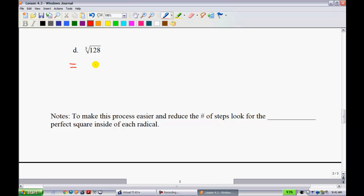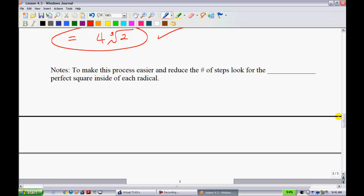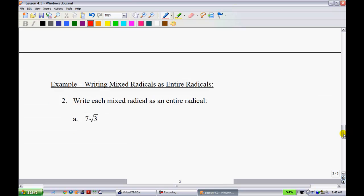The cube root of 128, you should recognize, is 64 times 2. The cube root of 64 is 4, so my final answer is 4, the cube root of 2. If you input both into your calculator, they're exactly the same thing. To make this process easier and reduce the number of steps, always look for the largest perfect square inside each radical. I say perfect square, but it could also be the largest perfect cube. In years to come, we'll deal with perfect fourth roots and so on.